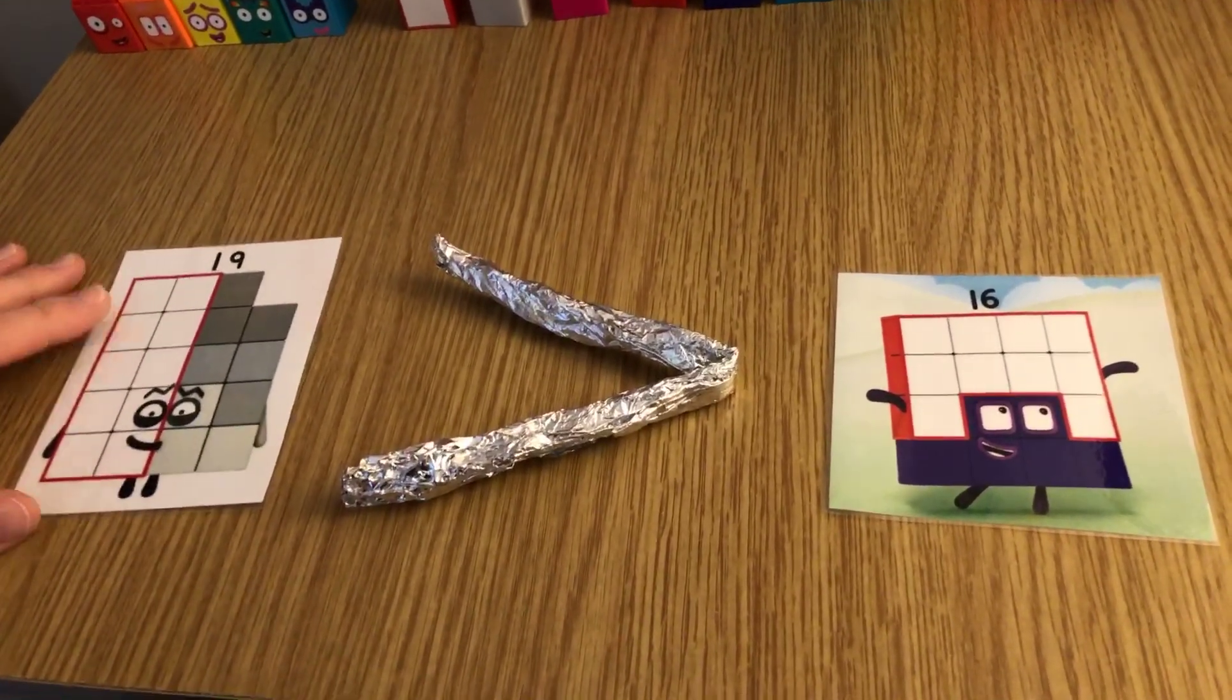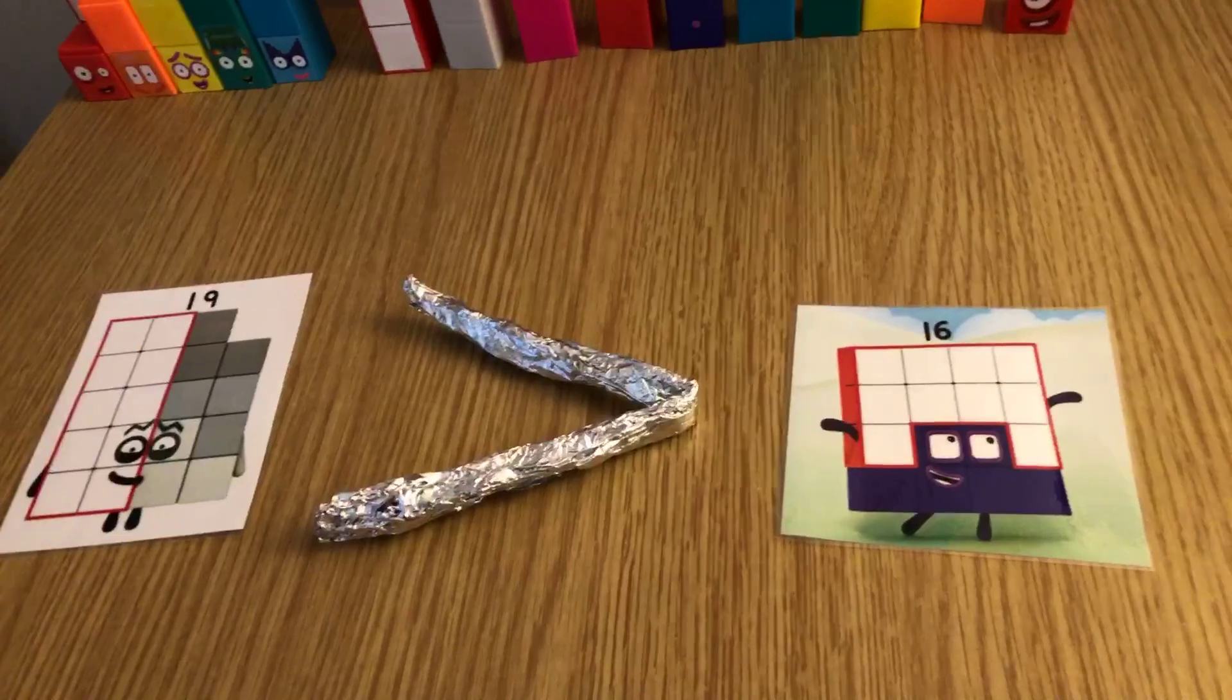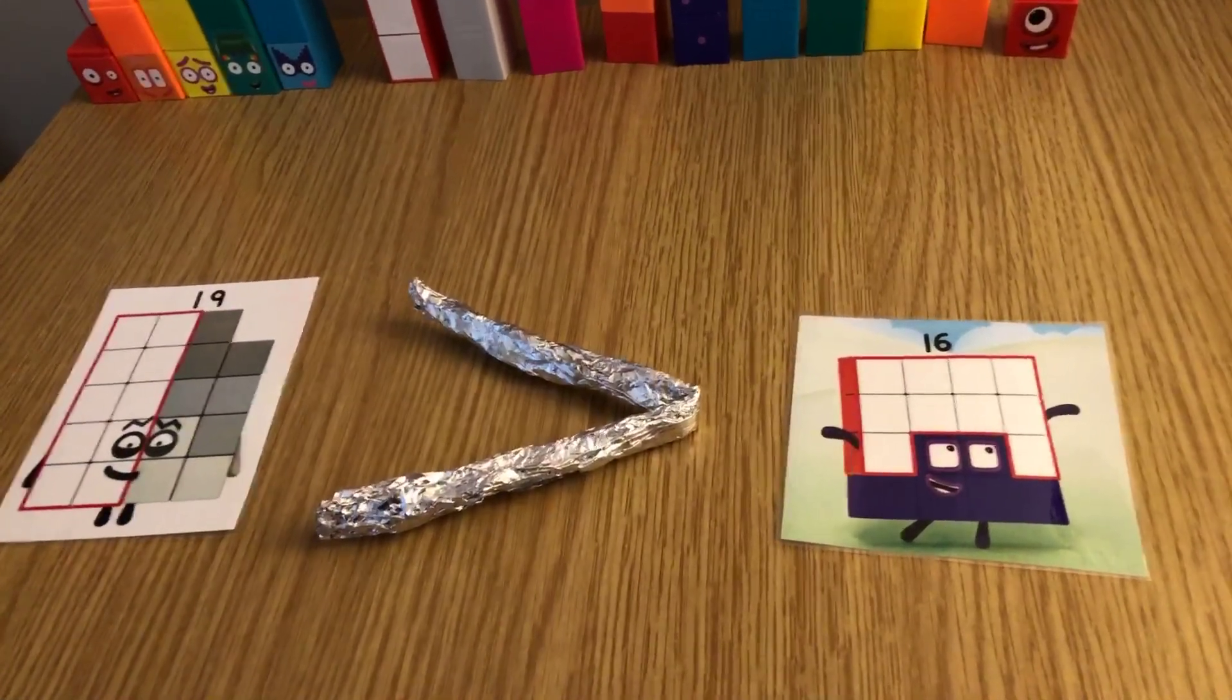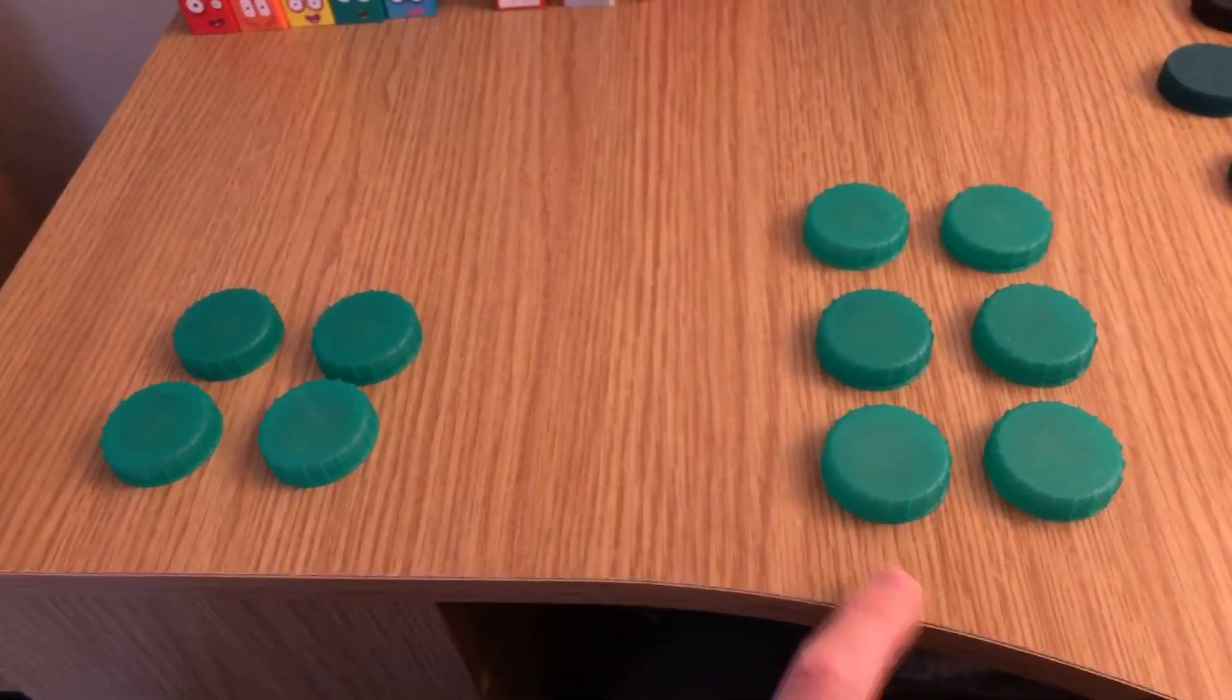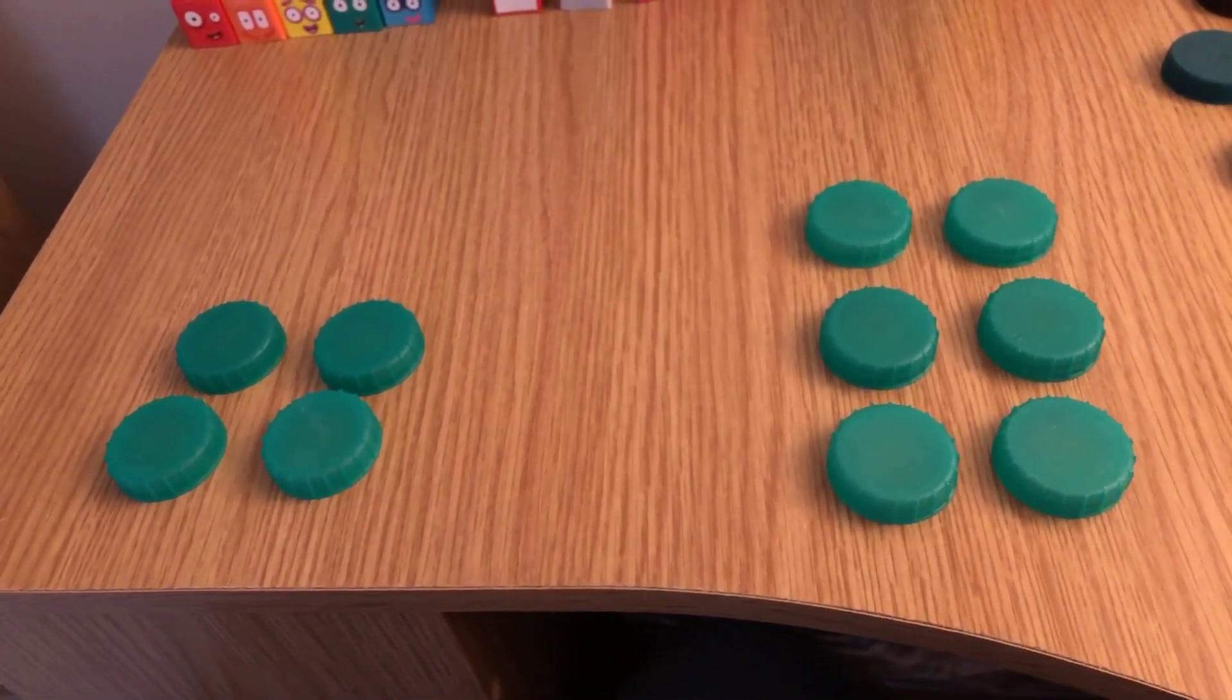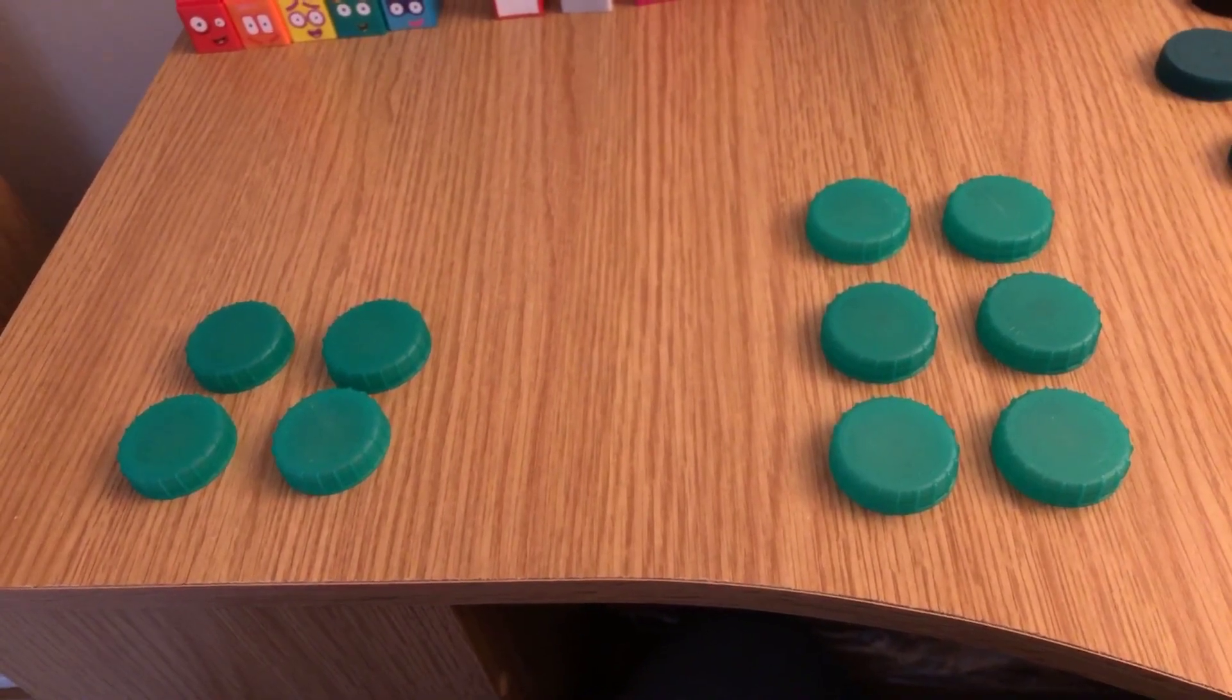Right, so here we go. I've got two different piles. Count how many is in this one, count how many is in that one. Hopefully you should just be able to see it and say it to be honest, and decide which one has the greater number in and which one has the less. Which pile has more, which one has less?